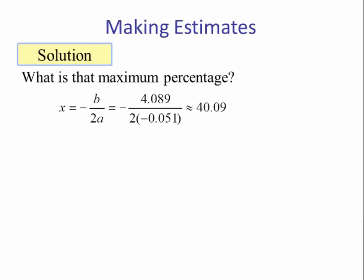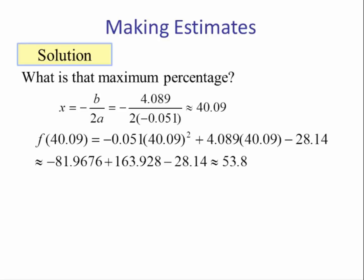Using our formula negative b over 2a, we have x is equal to 40.09. Now that's the year, so we have to take this 40.09 and plug it back into the model to get the percentage. Following the order of operation, we see that the percentage is 53.8%. So according to the model, at around age 40, the maximum percentage of workers who use a computer at work is about 53.8%.